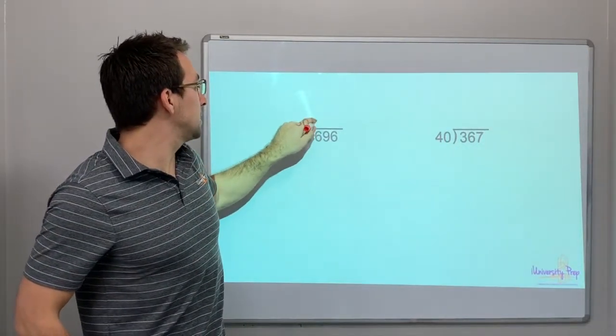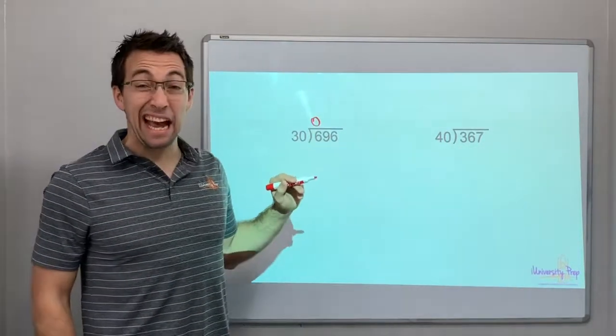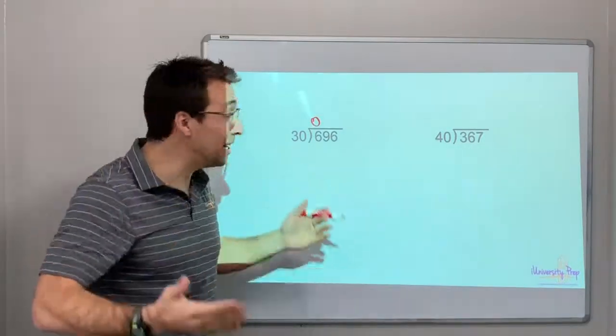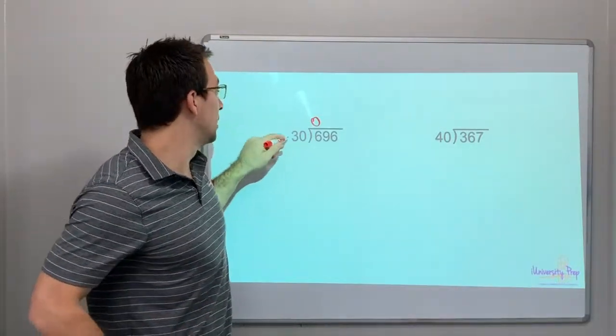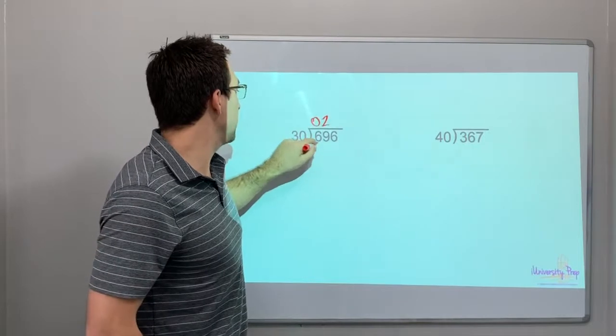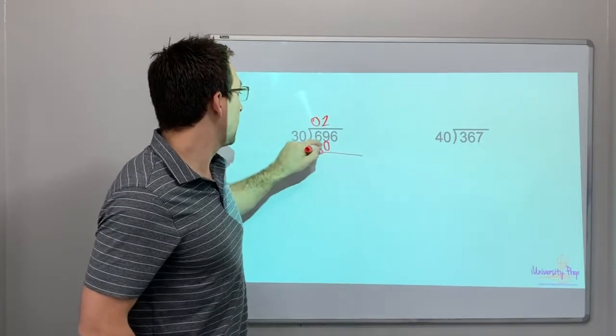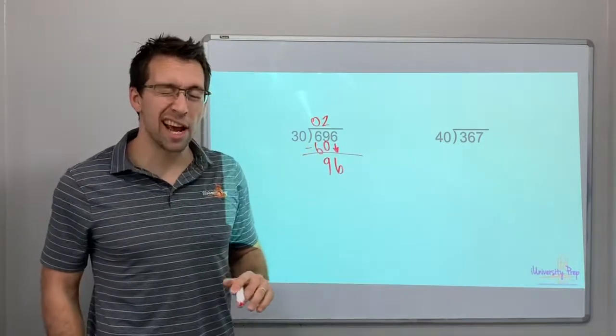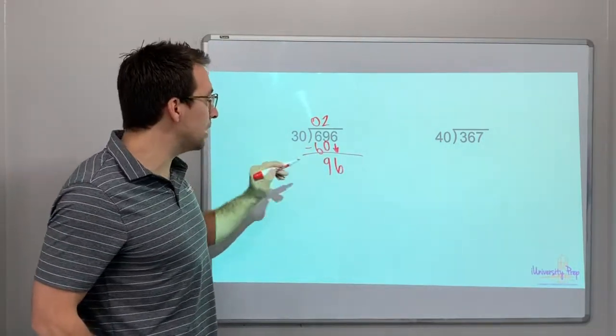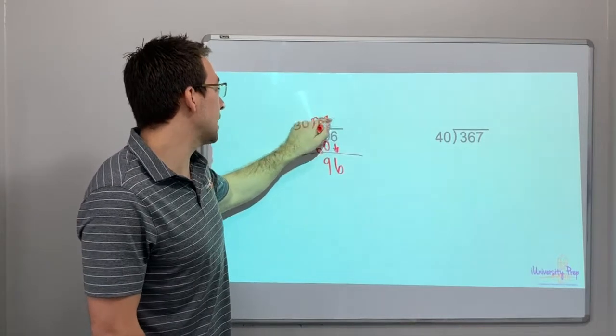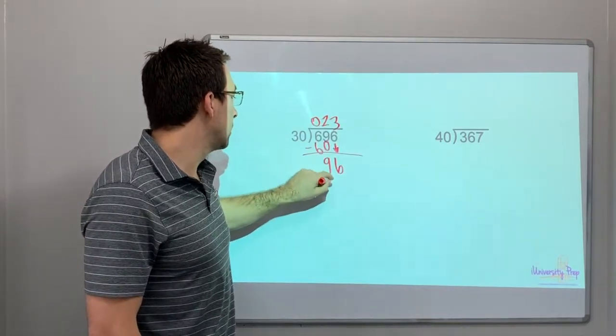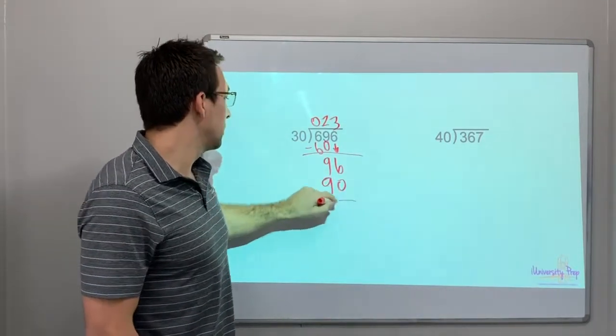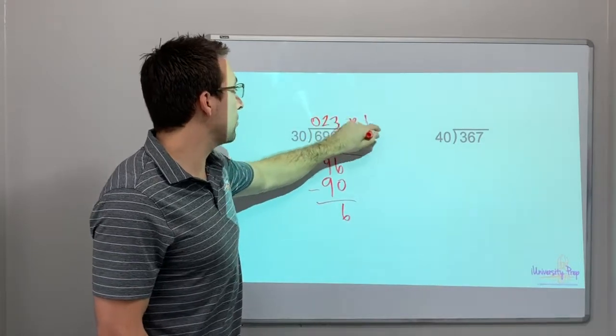30 goes into 6, 0 times. 30 goes into 69, 2 times. 3 times 2 is 6. So 2 times 30 is 60. 30 minus 9, drop our 6, so that would be 96. 30 goes into 90, 3 times 3 is 90, or 3 times 3 is 9. 23. So that would be 90, 20. 20 subtracted 23, remainder 6.